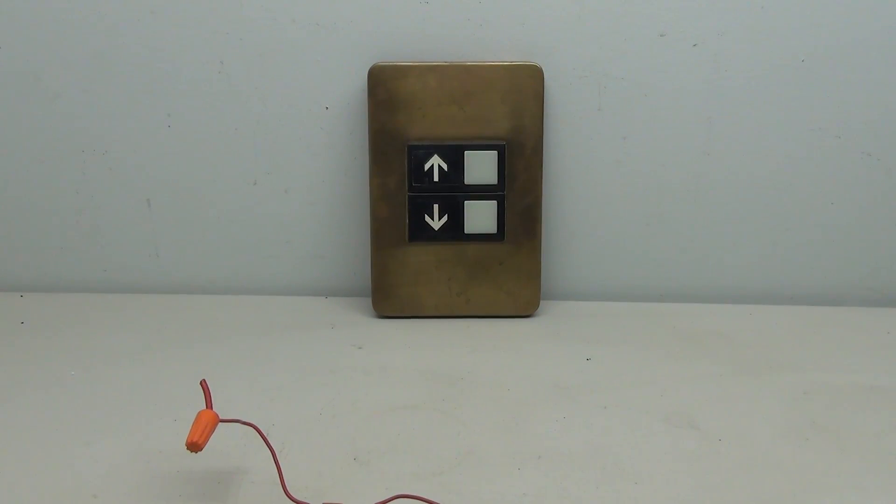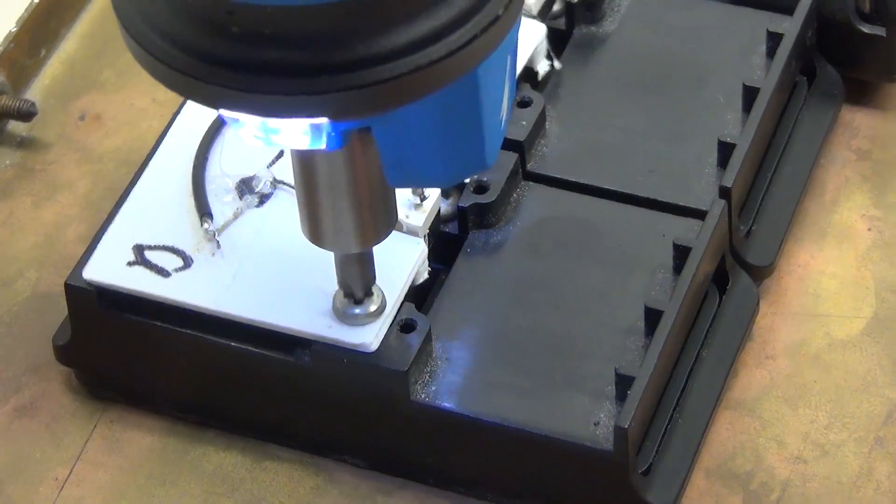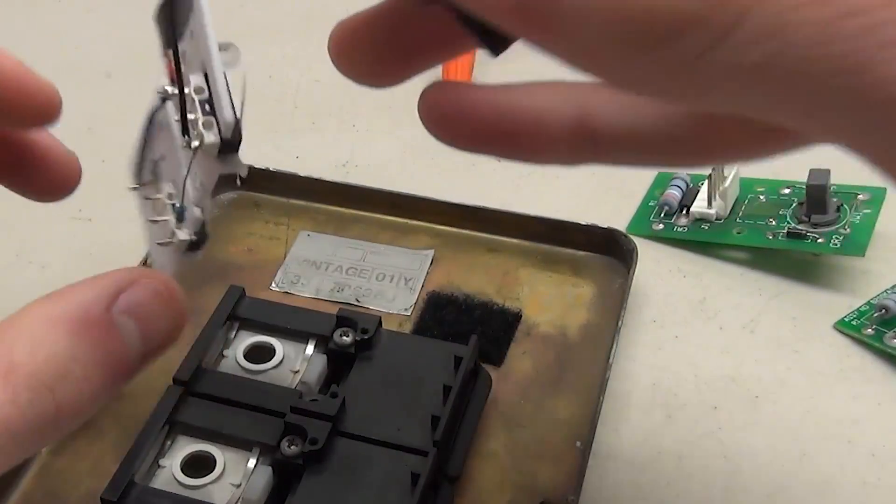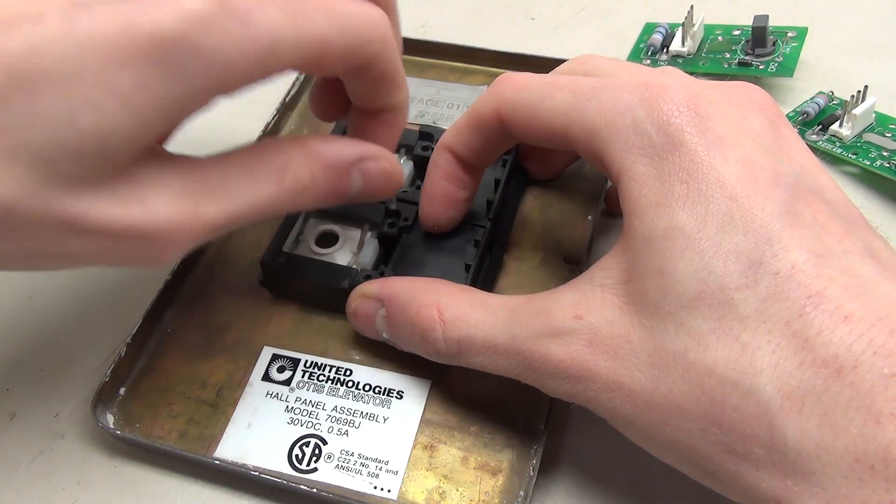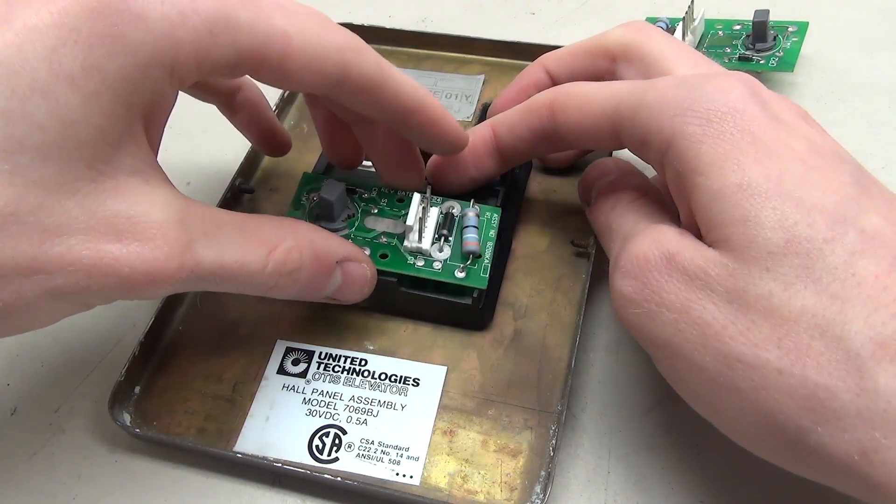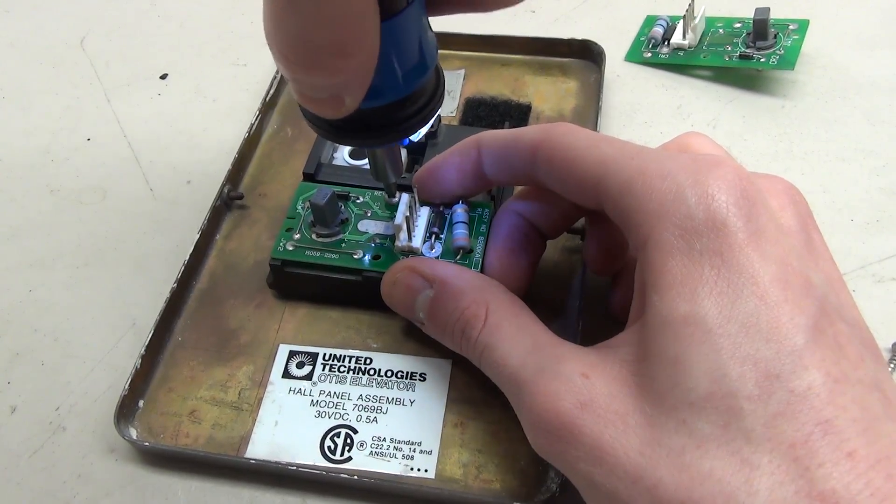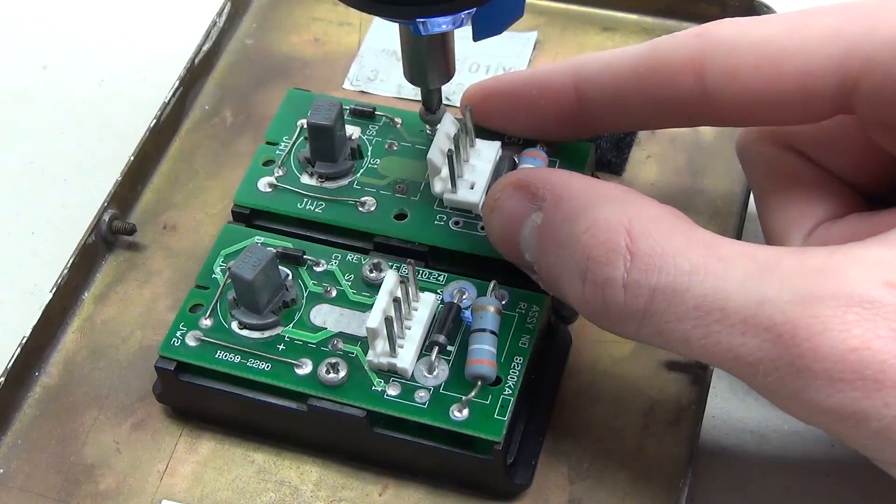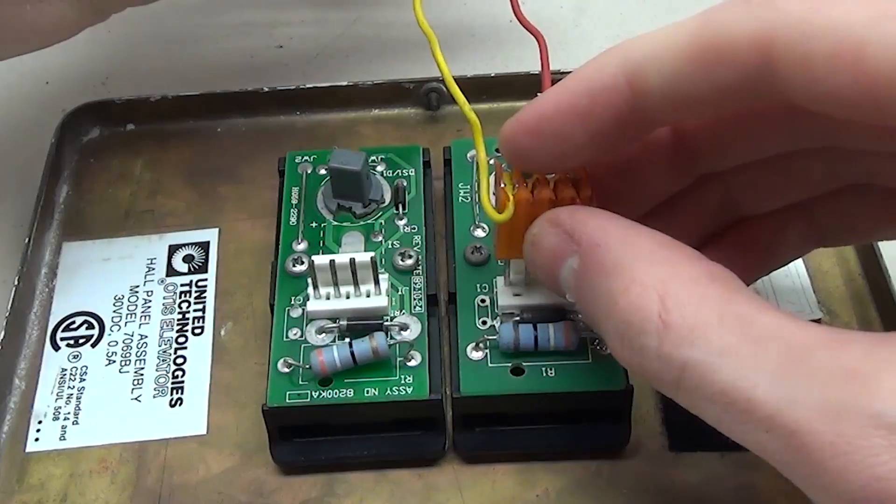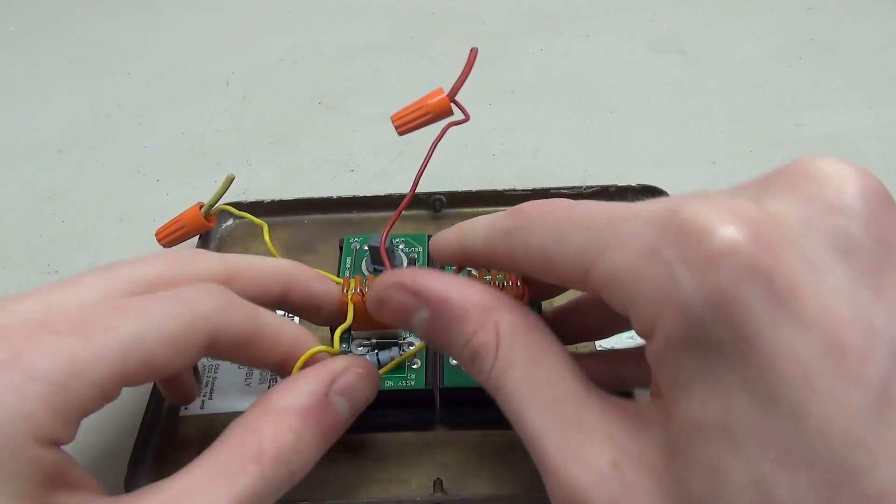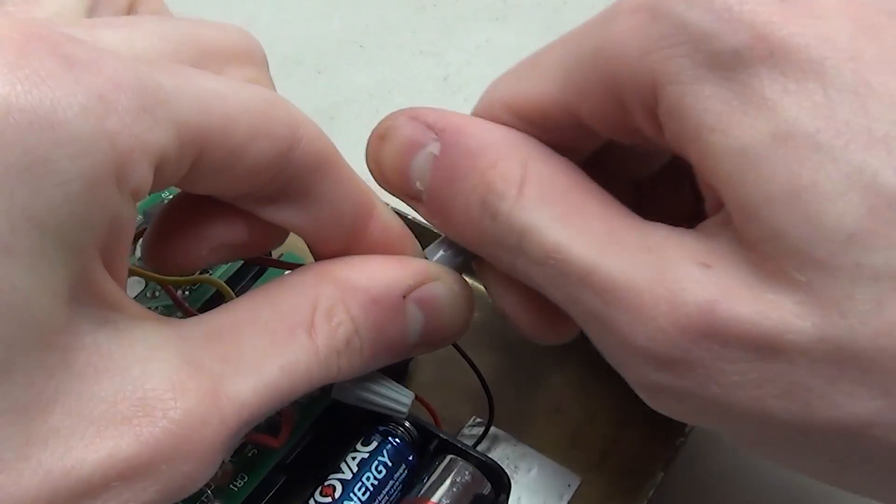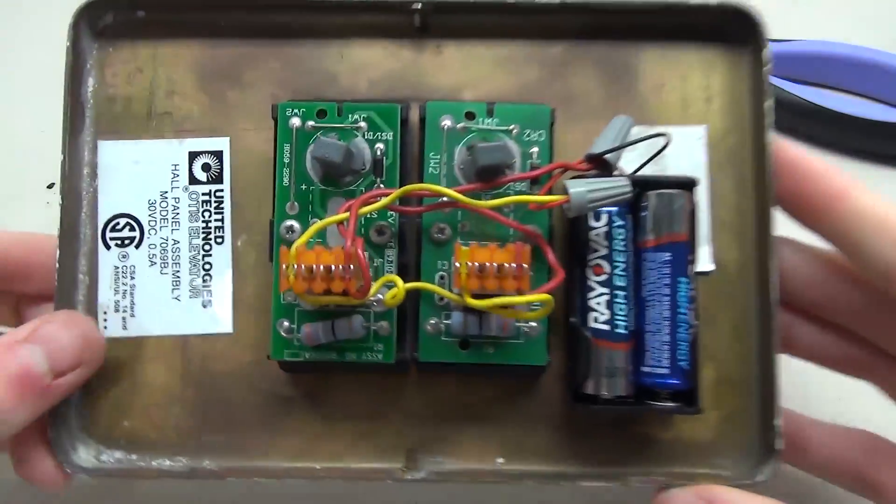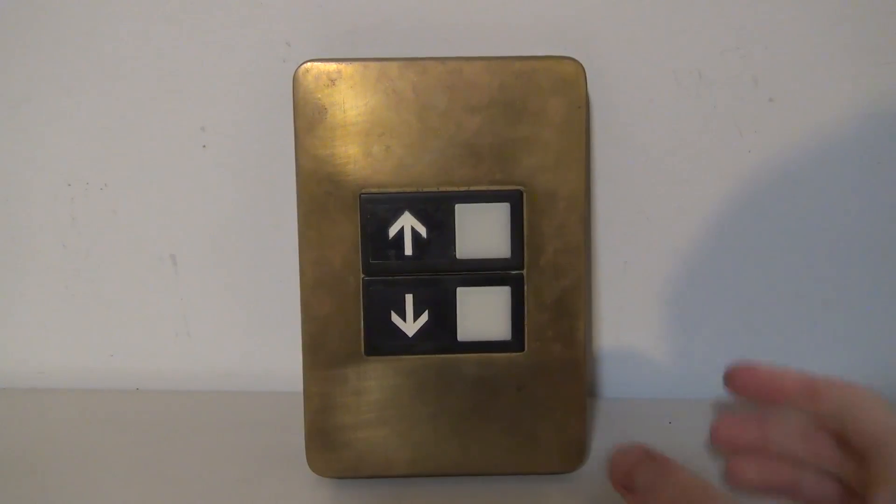The next step is to take the old circuit boards off the button and install the new ones. And that's pretty much all there is to it.